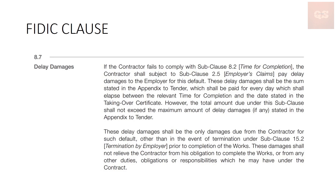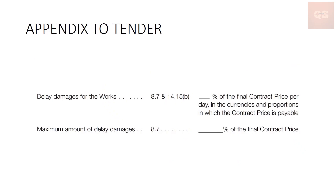Even if the contractor is delaying, it is still his obligation to complete the work. He cannot stop the work or forego his duties. Now, this is how an appendix to tender looks — you have to fill in the delay damages for the works and the maximum amount of delay damages. Subclause 8.7 covers delay damages, and clause 14.15(b) specifies which currency is used for the contract. If in UAE it will be dirhams; if in India it will be rupees. You fill in the percentage of the final contract price per day as the damage, and also the maximum amount — typically 10% as the maximum limit of delay damages.